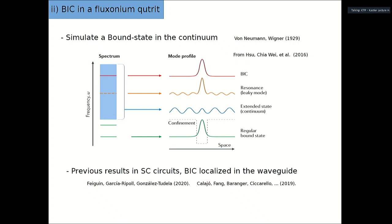In a quantum system, you can have different types of spectrum. At low energies, you have a discrete spectrum — these are confined states: the particle is localized in space. Going to the continuum, states are typically not localized but extended. You can have weak resonances, where the particle is concentrated in a region but can still leak to infinity. A BIC is a mode that lies in the continuum part of the spectrum but is completely localized like a discrete state. This is interesting from both theoretical and application perspectives.